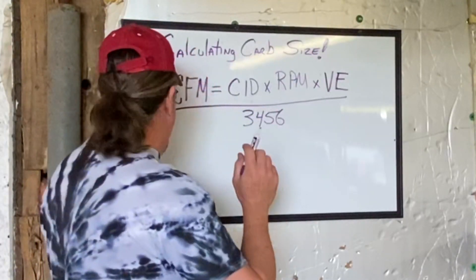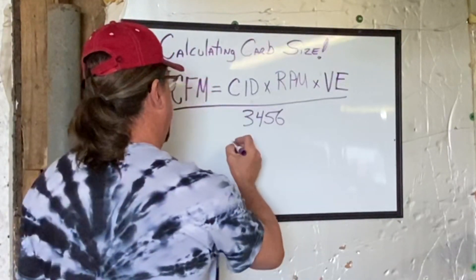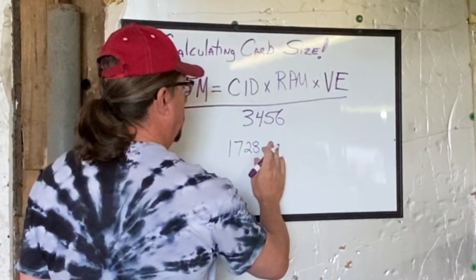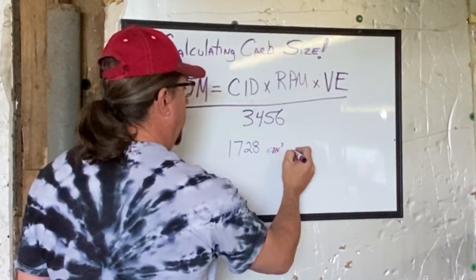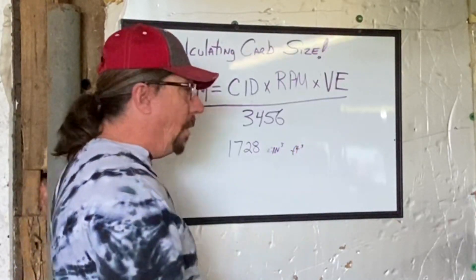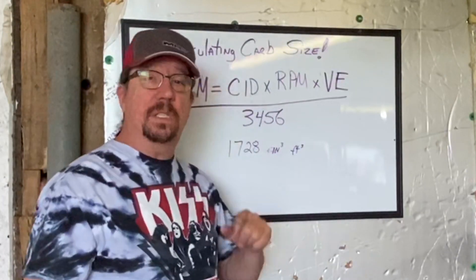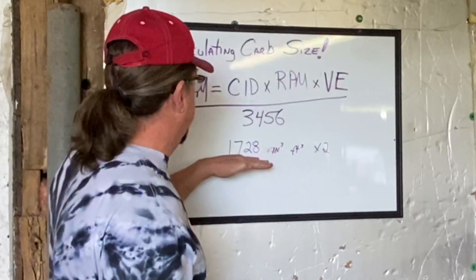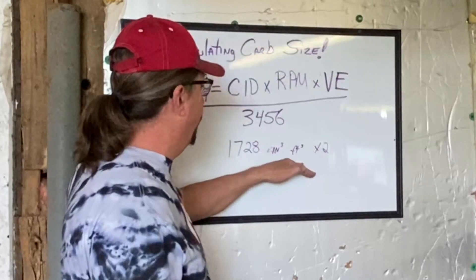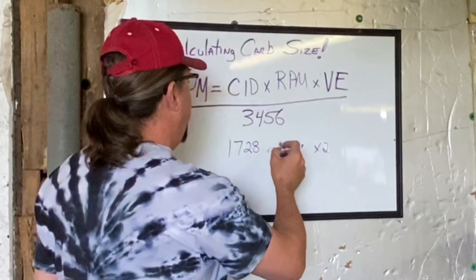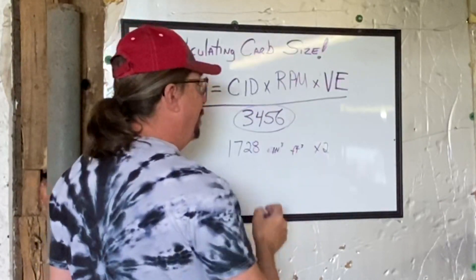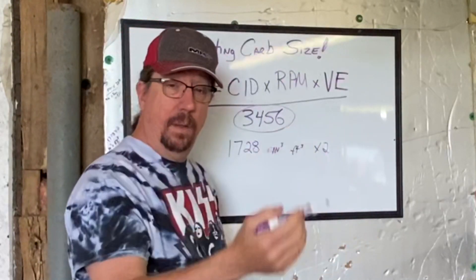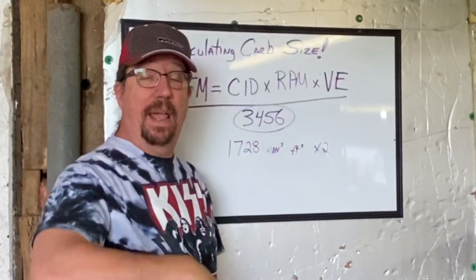If we look at how many cubic inches there are in a cubic foot, there are 1728 cubic inches in a cubic foot. We also need to know how many revolutions there are in a power cycle on a four-stroke engine, which is 2. So we take 1728 — how many cubic inches in a cubic foot — and multiply that times 2, so we know that there are 3456 cubic inches in one power cycle of a four-stroke engine. That's where this number comes from.